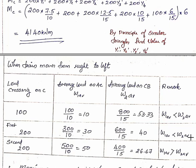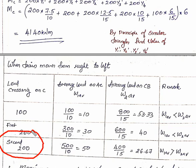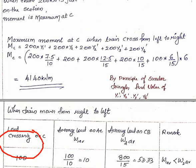W2av is greater than W1av. The average load on AC is 600 divided by 15 = 40, and CB average is 26.67. So W2av (40) is greater than W1av. The critical load at section C is the second 200 kN load. The maximum bending moment is calculated using the 200 kN load at C.